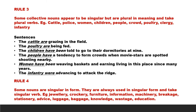Rule 3. Some collective nouns appear to be singular but are plural in meaning and take plural verbs. Example: the collective nouns cattle, police, women, children, people, crowd, poultry, clergy, infantry. They appear to be singular but actually they are plural in meaning and the verbs used with them will also be plural verbs.